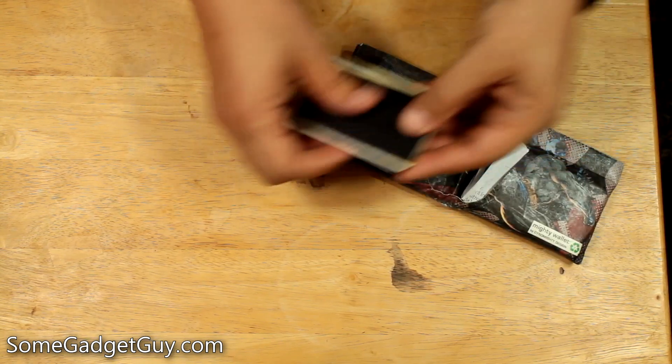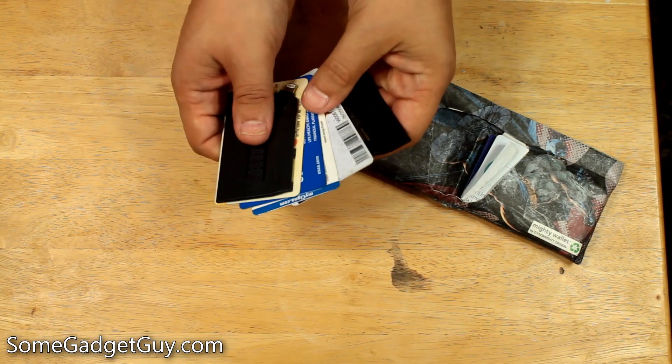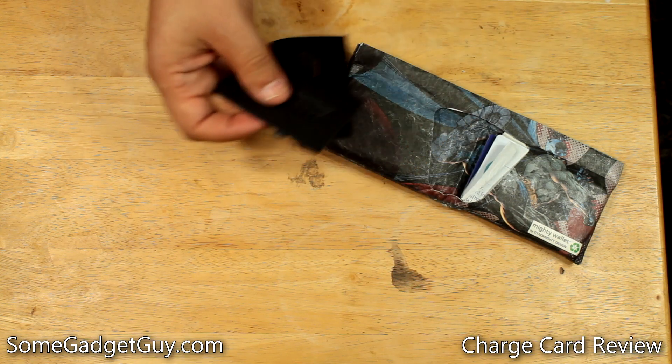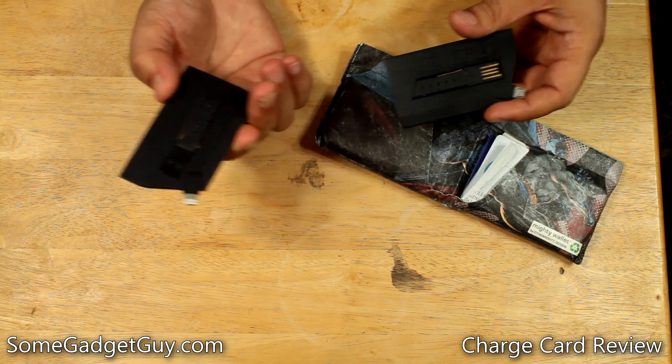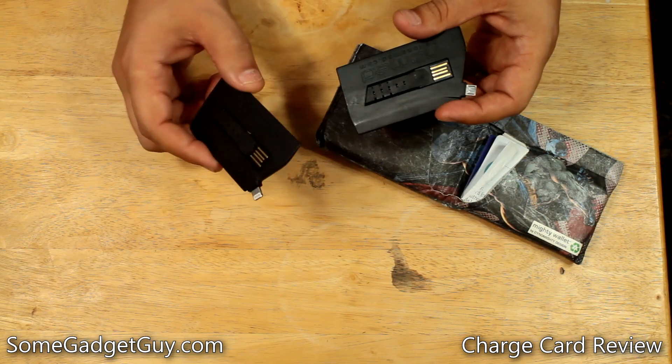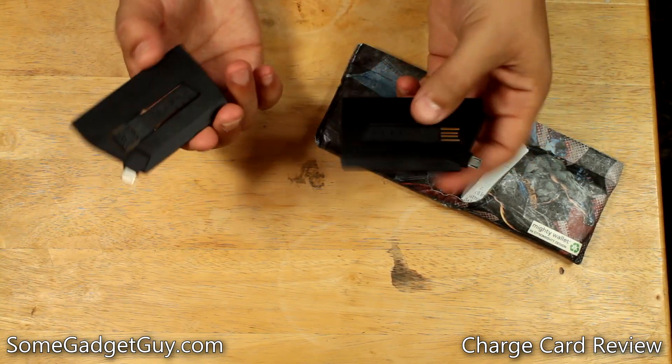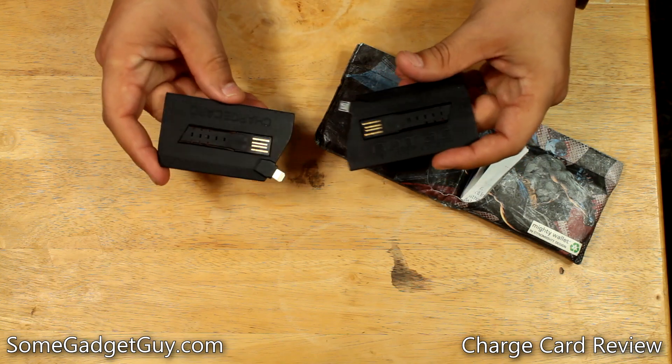And then identification stuff, so driver's license and insurance and my membership cards and my healthcare cards. And then I also keep a pair of these charge cards from Nomad. So if I ever need to help someone with an iPhone charge their device on the go or someone with a micro USB port charge their device on the go, I keep one of each just so that I'm always prepared because I'm also an Eagle Scout and I'm a big dork like that.